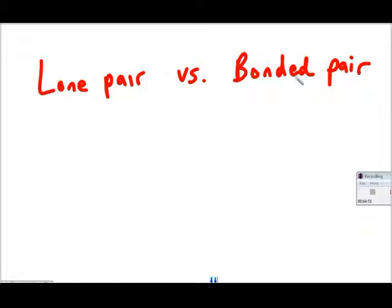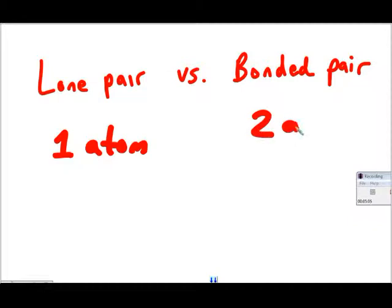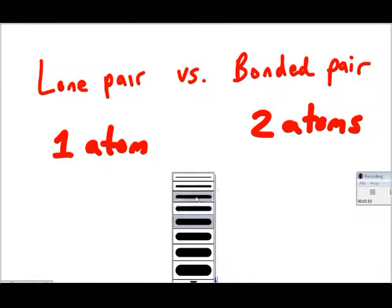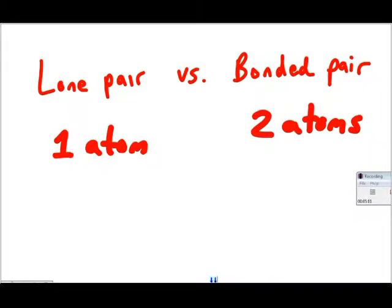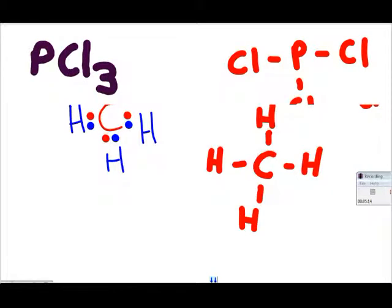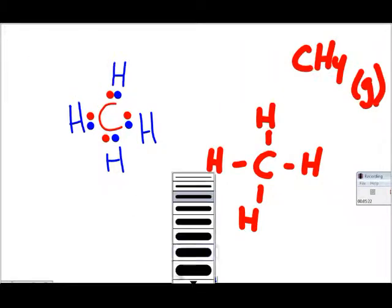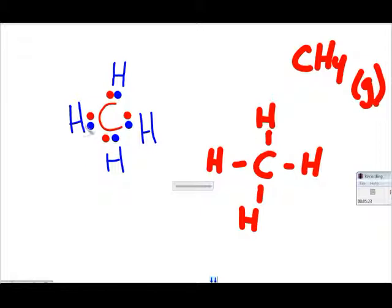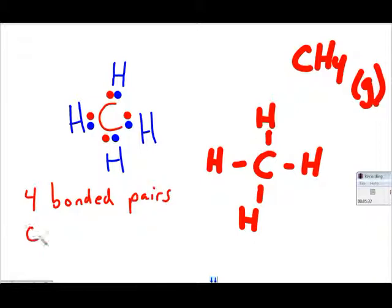One last thing in lesson 4: lone pairs of electrons versus bonded pairs. Lone pairs belong to one single atom — they are the property of one atom. Bonded pairs are pairs being shared among two atoms as part of a covalent bond. Looking at methane, are there any lone pairs? No — no lone pairs. We have four bonded pairs with zero lone pairs.